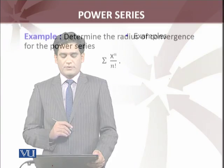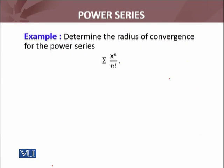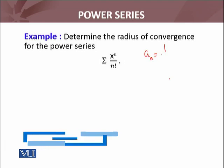The first one is summation x raised to power n over n factorial. Here we have a_n equals 1 over n factorial, and this power series is about x_0 equals 0.